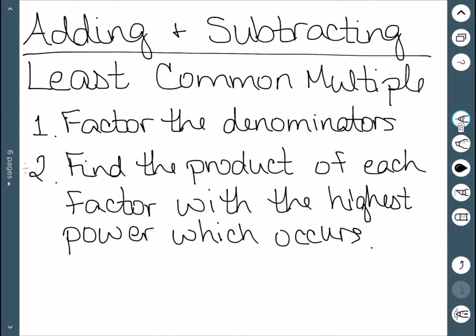The second step is to find the product of each factor with the highest power which occurs. The easiest way to do this is to look at the first fraction, write down everything on the denominator, move to the second one, add in anything that's missing, move to the third, add in anything that's missing, and so on.